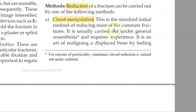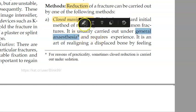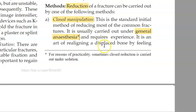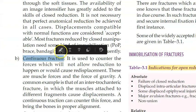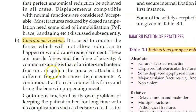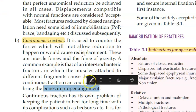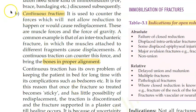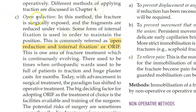Closed reduction is done under general anesthesia — you realign the displaced bone by manipulation, or apply continuous traction pulling on both sides to bring the bones into proper alignment. Open reduction is performed when closed reduction cannot be done or has failed.